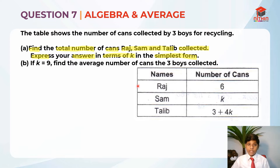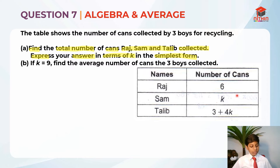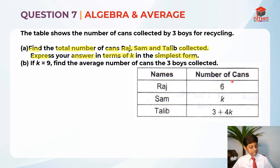So let's highlight the key information. They are telling us to find the total number of cans and express the answer in terms of K in the simplest form. This is the table they have given us: Raj collected 6 cans, Sam collected K number of cans, and Talib collected 3 plus 4K cans.